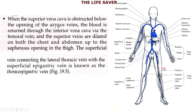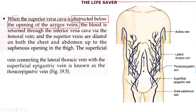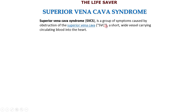But when the Superior Vena Cava is obstructed below the level of the azygous vein, then the blood from the upper part of the body is carried by the inferior vena cava via the femoral vein, which drains its blood into the heart. That is why the vessels present on the chest as well as the abdomen both become dilated. The superficial epigastric vein, the lateral thoracic vein, and the thoracoepigastric vein — which connects the lateral thoracic vein with the superficial epigastric vein — all become involved.